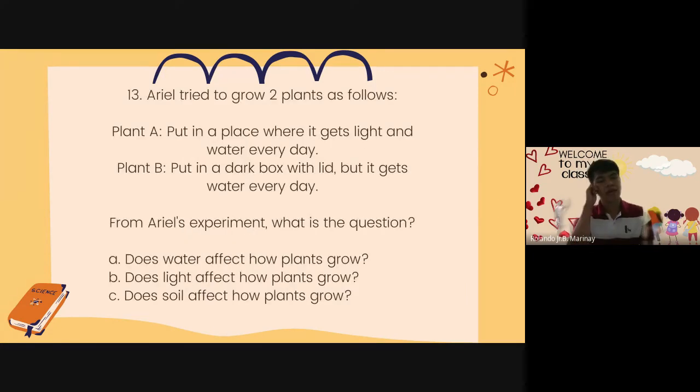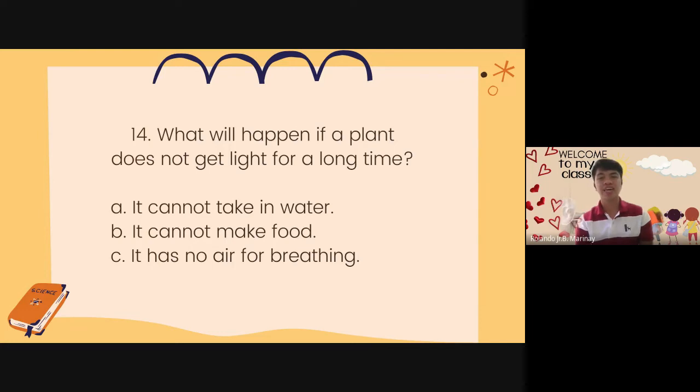Number 13. Ariel tried to grow two plants as follows. Plant A. Put in a place where it gets light and water every day. Plant B. Put in a dark box with leaves. But it gets water every day. From Ariel's experiment, what is the question? A. Does water affect how plants grow? B. Does light affect how plants grow? Or C. Does soil affect how plants grow? Number 14. What will happen if a plant does not get light for a long time? A. It cannot take in water. B. It cannot make food. C. It has no air for breathing.